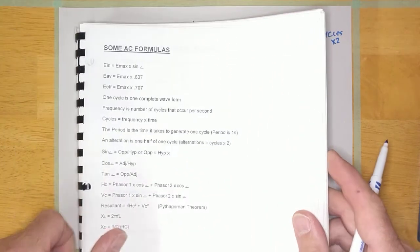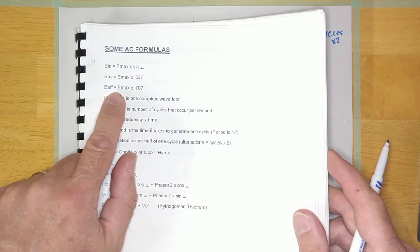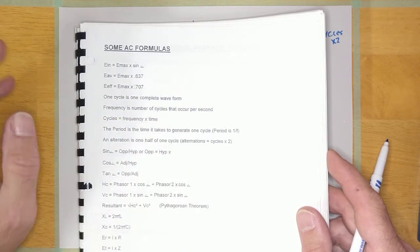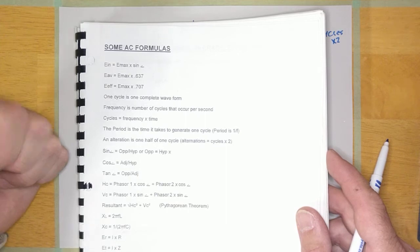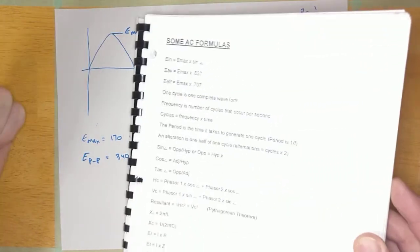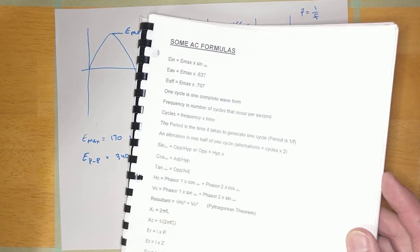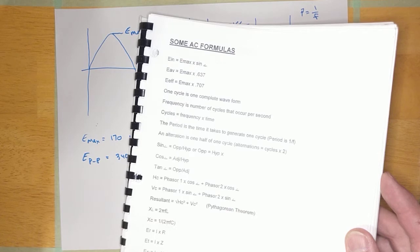Now, if you look at our little formula sheet here, it says E effective is equal to E max times 0.7071. Now, I need you guys to remember that E effective and E RMS are exactly the same thing.